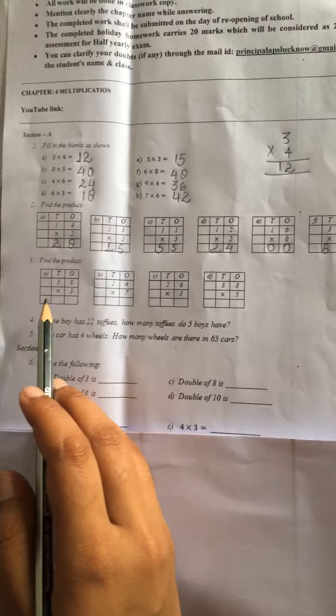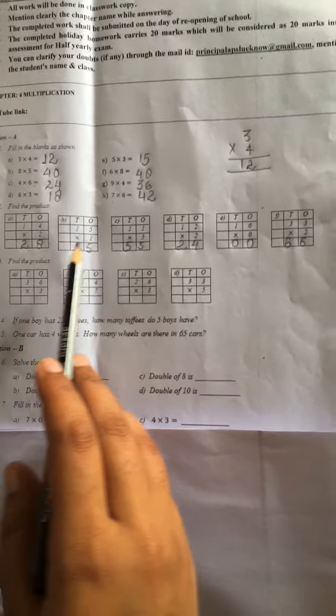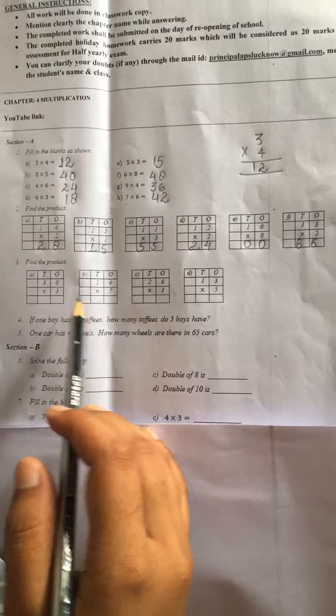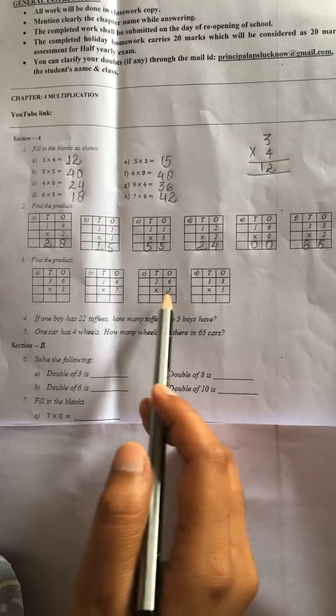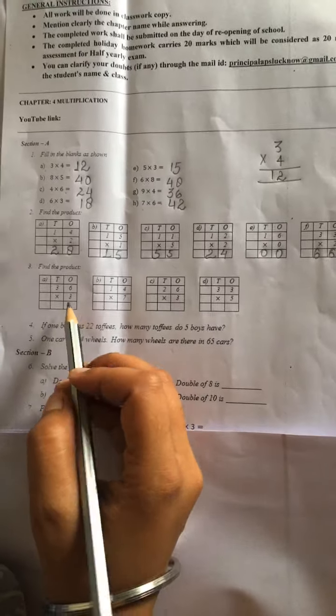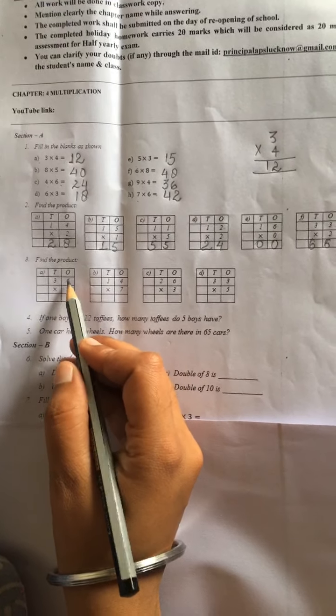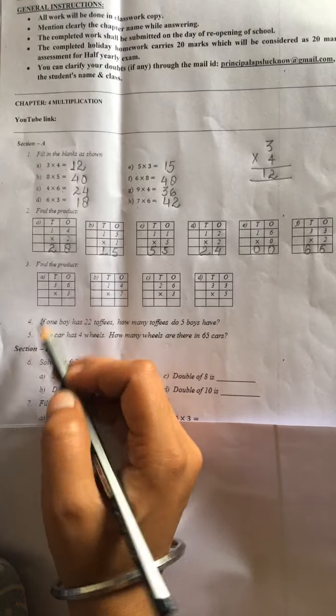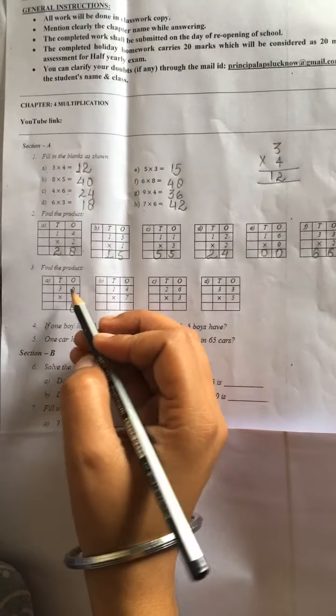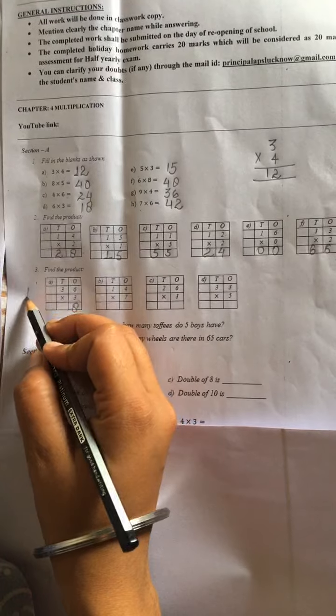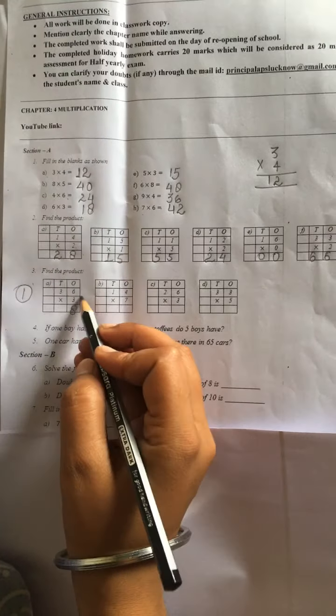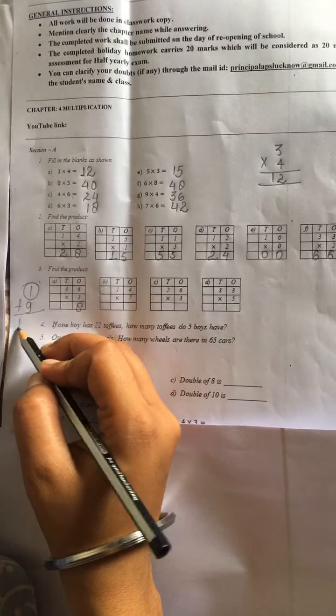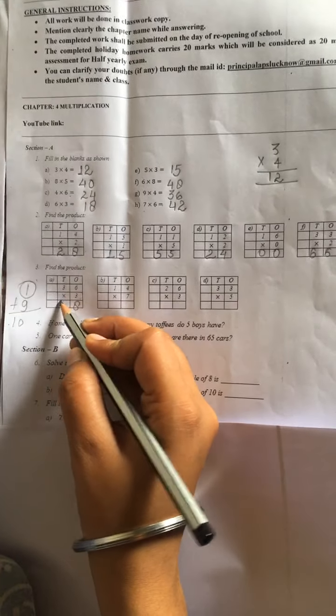Now come to the third question. Question number 2 mein hamare jo bhi multiply the without carry. Now question number 3 mein jo hamare multiply hain, is mein hum ko kya lena padega? Carry. So similarly, 3 ka multiply pehle 6 pe karenge, phir 3 ka multiply 3 mein karenge. So 3 times 6 is 18. Carry kitna aaya? 1. 3 times 3 is 9, 9 plus 1, 10. So 10 will be right.